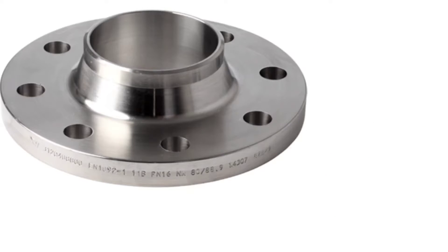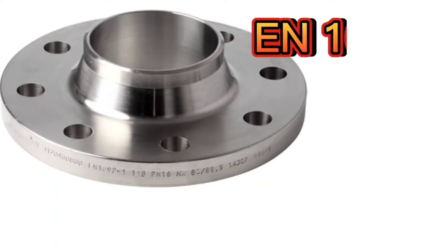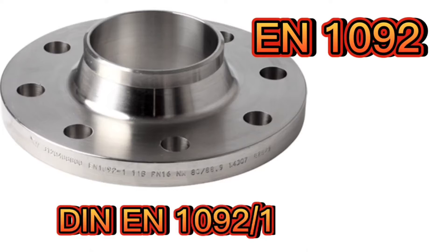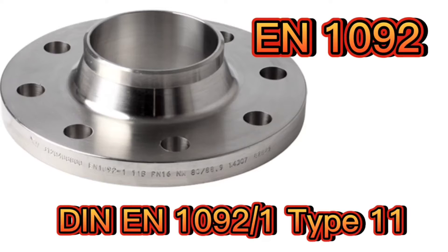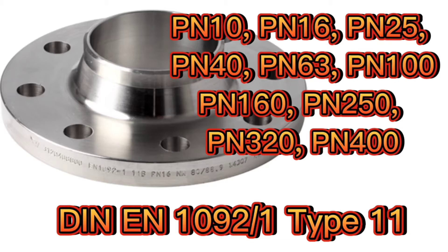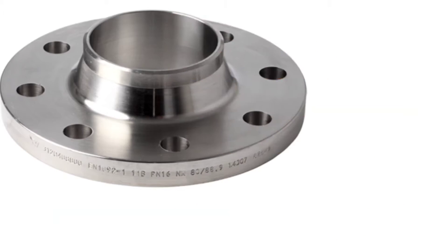National flange standards in Europe have largely been superseded by the European EN 1092 series. This European standard for flanges contains pressure ratings of PN 10, PN 16, PN 25, PN 40, PN 63, PN 100, PN 160, PN 250, PN 320, and PN 400.